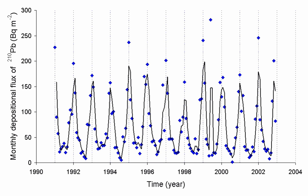Radon is a colorless, odorless, and tasteless gas and therefore is not detectable by human senses alone. At standard temperature and pressure, radon forms a monatomic gas with a density of 9.73 kg per cubic meter, about eight times the density of the Earth's atmosphere at sea level, 1.217 kg per cubic meter. Radon is one of the densest gases at room temperature and is the densest of the noble gases.